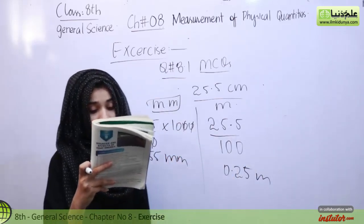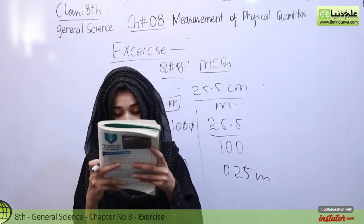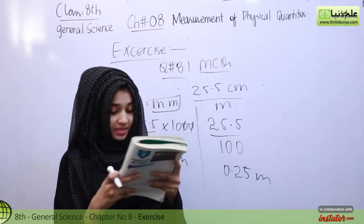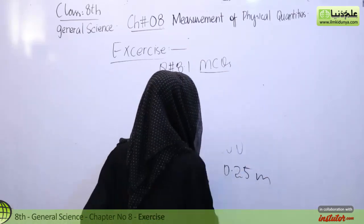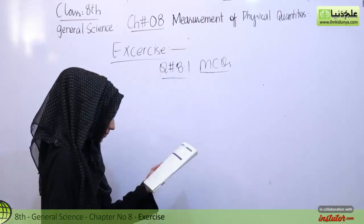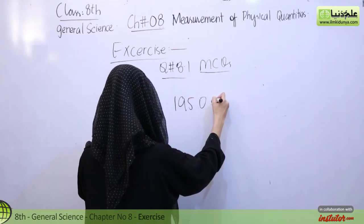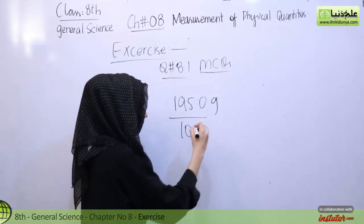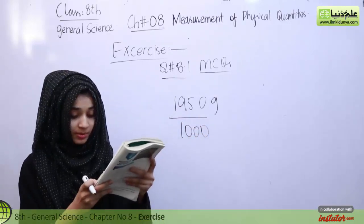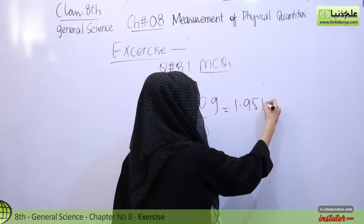Next, the mass of an iron plate is 1,950 gram. What is its mass in kilograms? Gram to kilograms, we will divide it by 1000. When we divide it, the answer will be 1.95 kg.